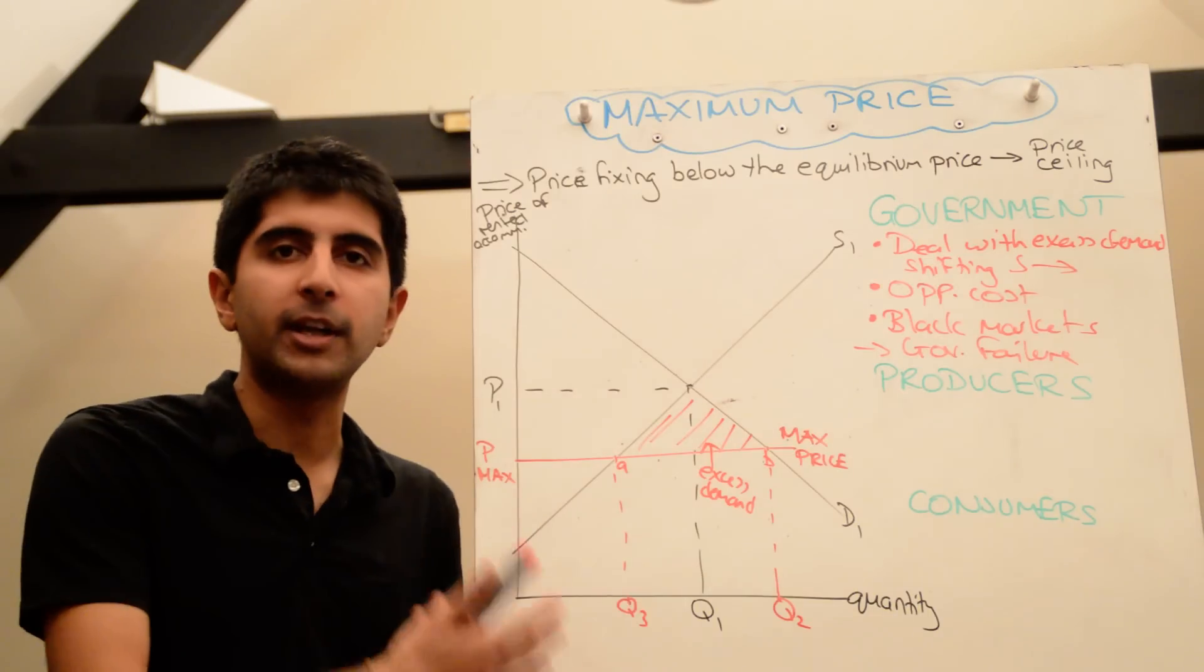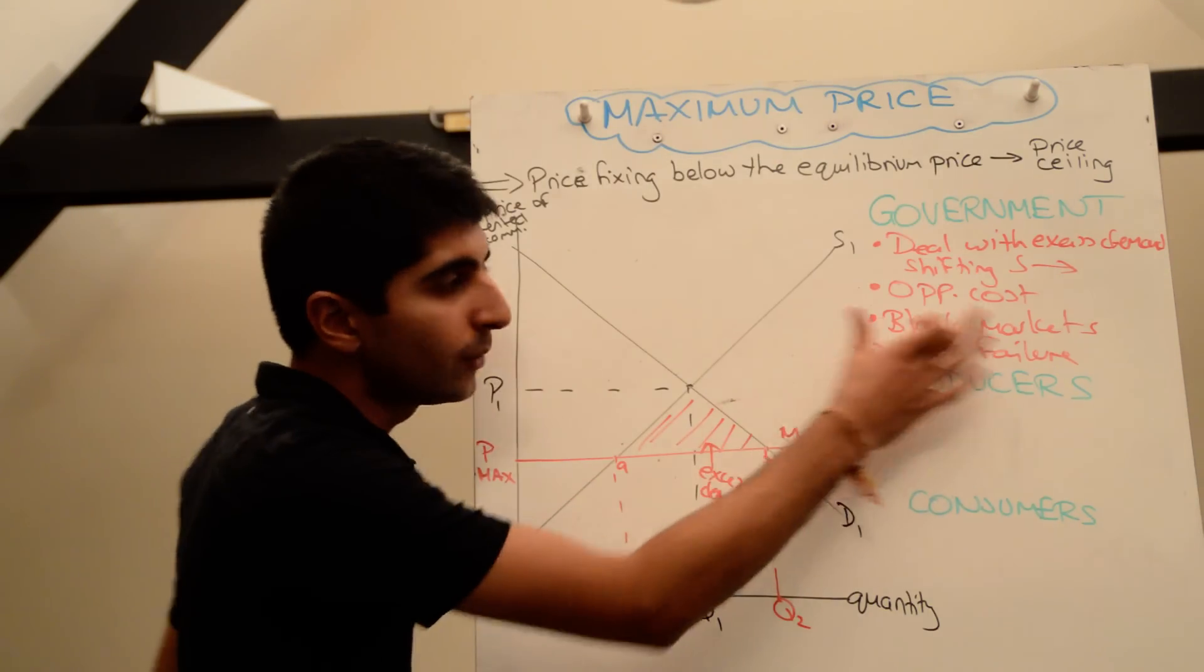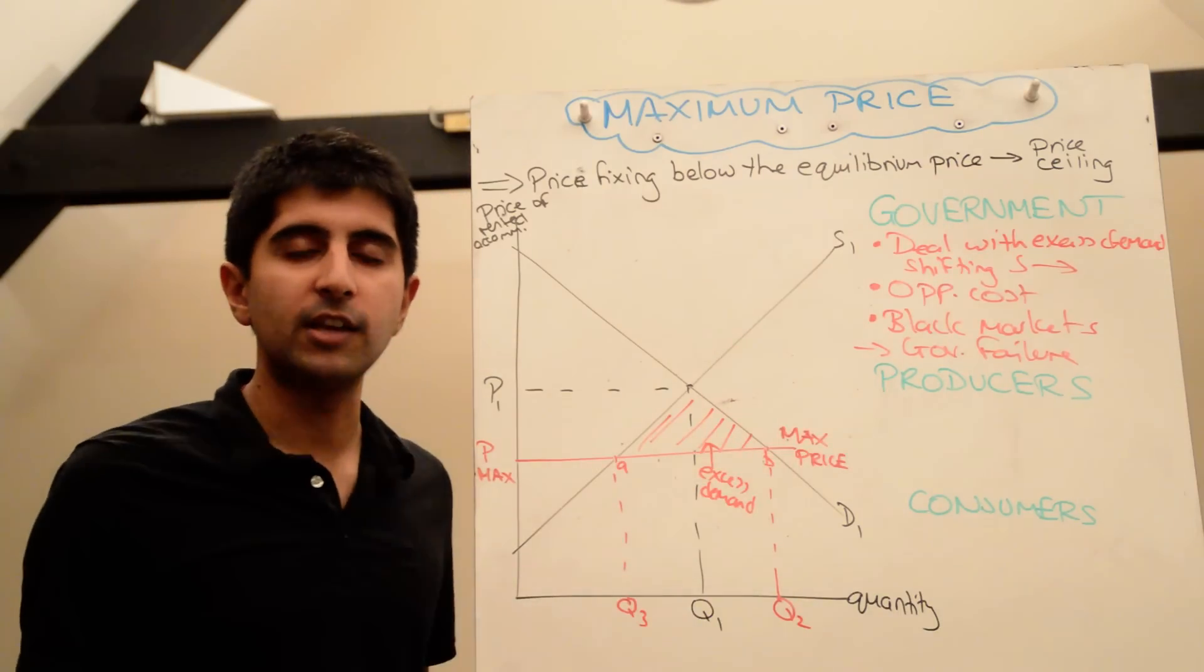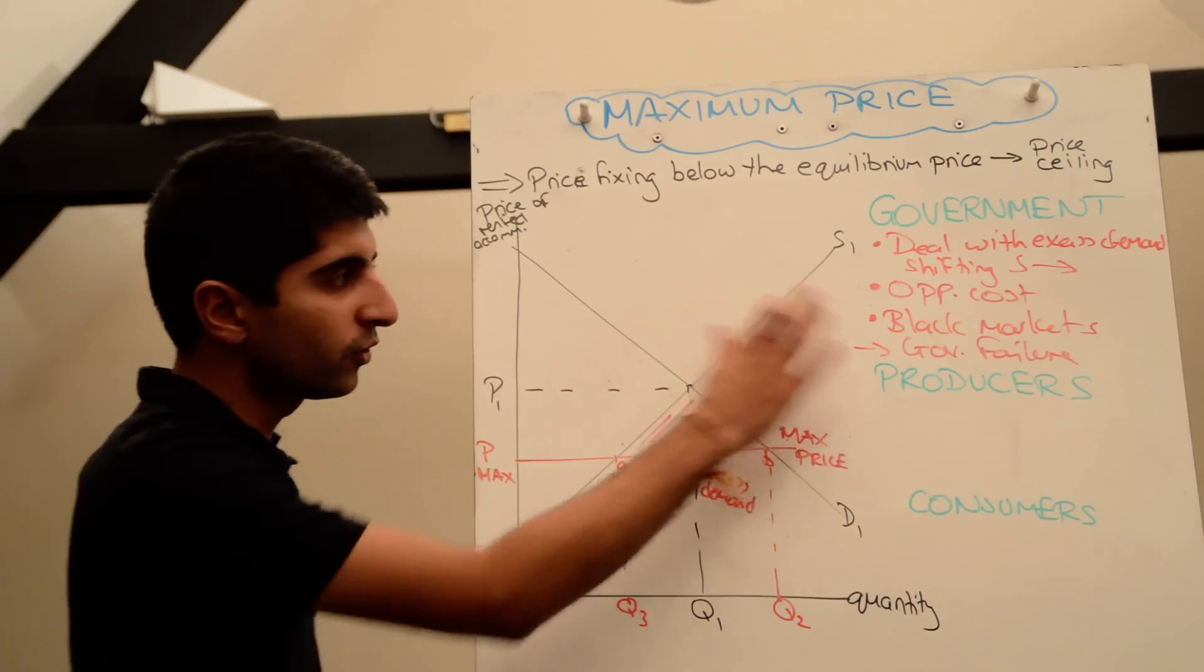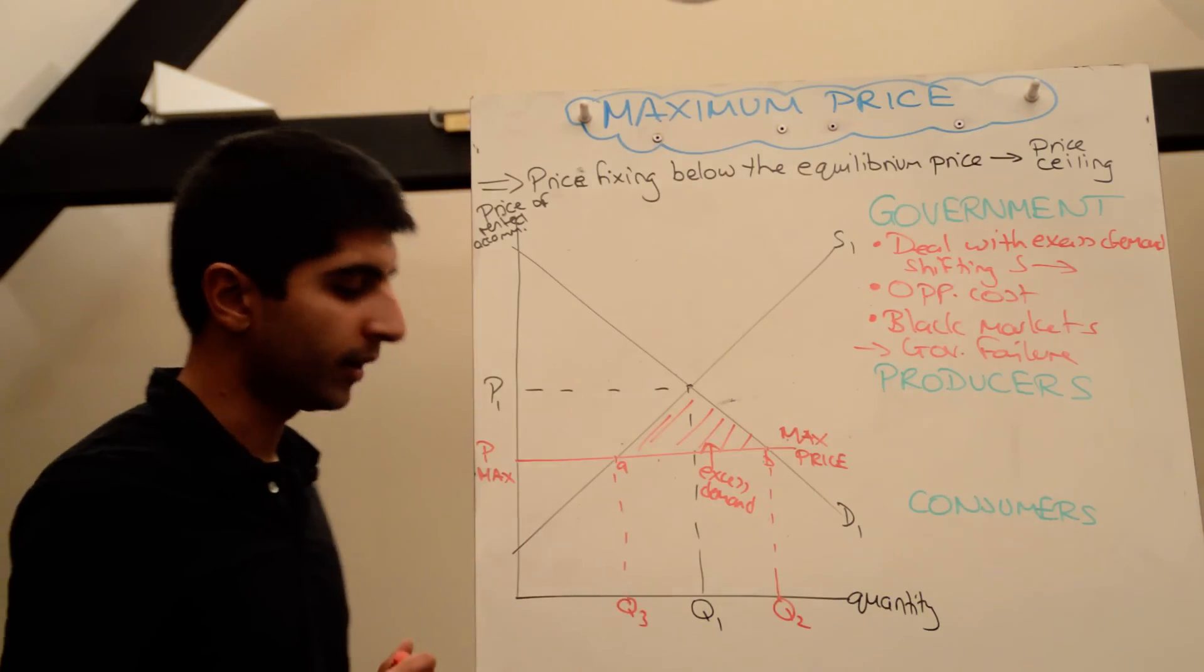It can lead to government failure. The government now needs to spend money to regulate and enforce policing to deal with potential black markets. And if they don't, there could well be a greater misallocation of resources, a bigger market failure. So that's not good. So the government must also bear that in mind and realize that black markets could well form as a result of a maximum price.